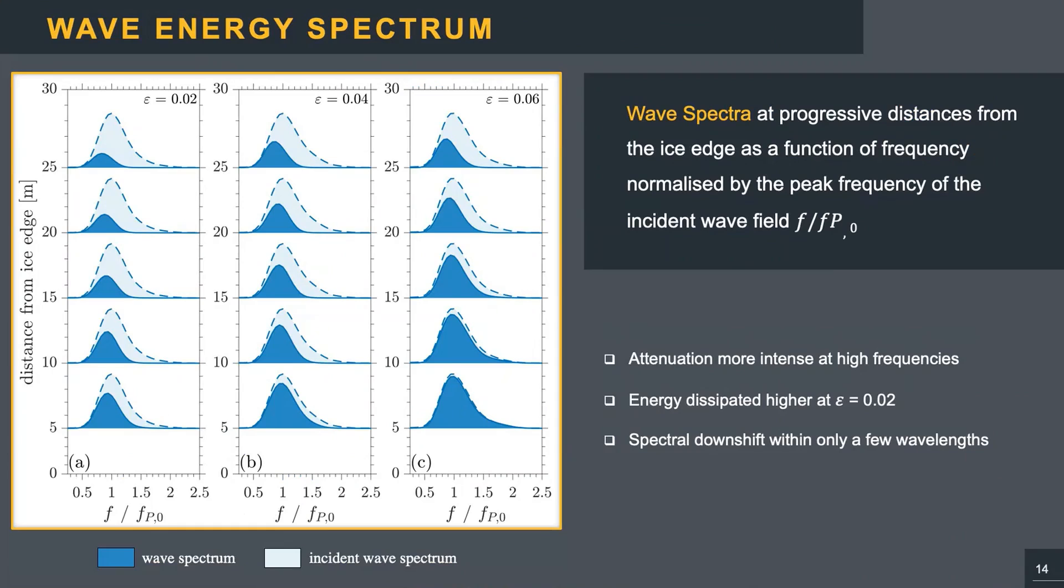The time series at each probe were then used to compute the wave energy spectrum with a Fourier transform approach. Here, a representation of the evolution of the full wave spectrum in ice, with a light blue area denoting the incident open water spectrum. This figure confirms that energy attenuation is more intense at the high frequencies, regardless of the steepness. The energy dissipated increases as waves propagate in ice, and is more conspicuous at the low steepness due to the compact ice cover. The result is a significant spectral downshift within only a few wavelengths of propagation.